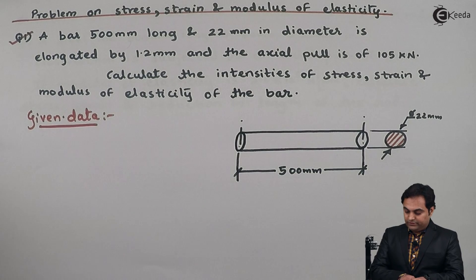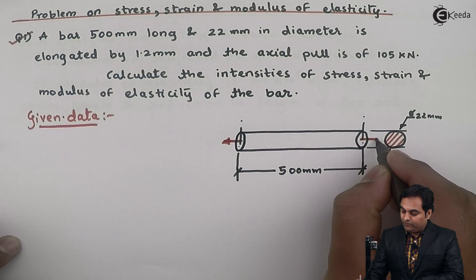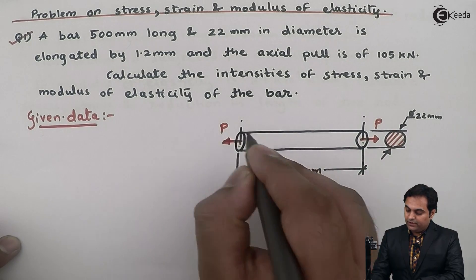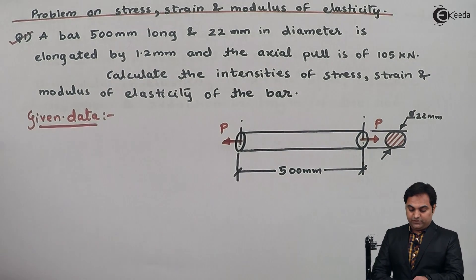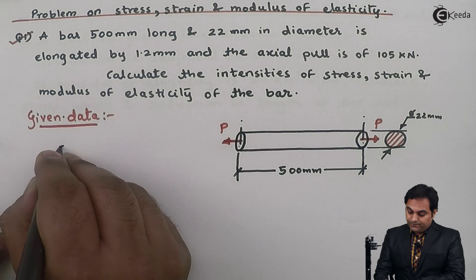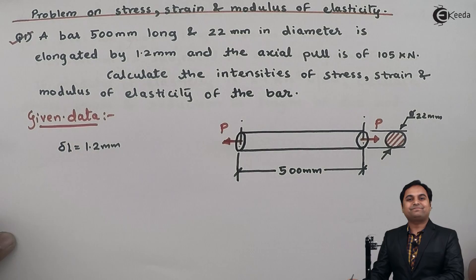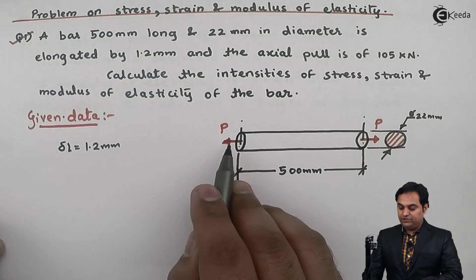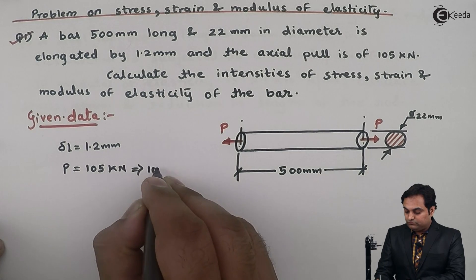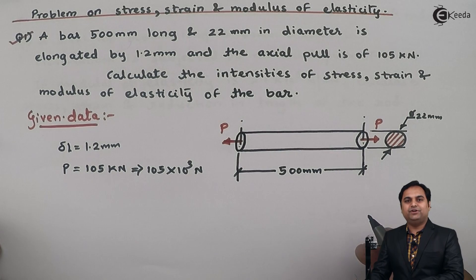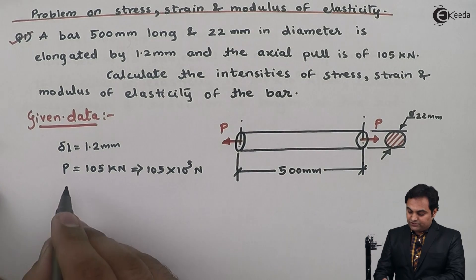The bar is elongated by 1.2 mm, which means there is a pull type of load on the bar, denoted by P. The elongation is denoted by Delta L, which is 1.2 mm. The axial pull P is given as 105 kilo Newton, that is 105 into 10 raised to 3 Newton.